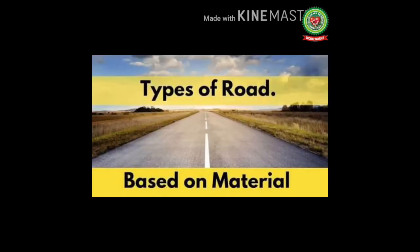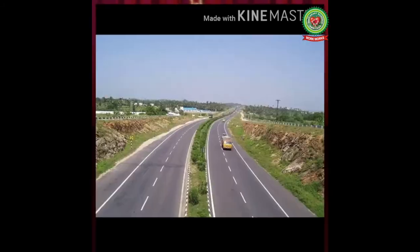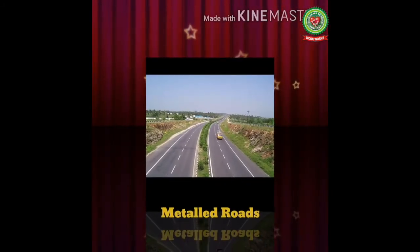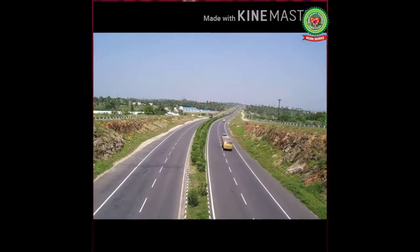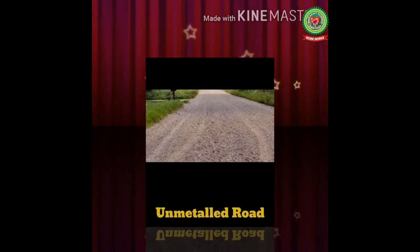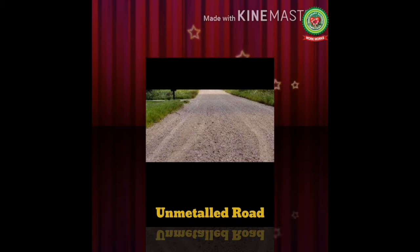There are two types of roads based on the material they are built with: metalled roads and unmetalled roads. Metalled roads are also known as pakka roads and are made up of coal, cement, and tar. These roads are generally found in cities and towns. Unmetalled roads are also known as kaccha roads, made up of mud tracks, and are usually found in villages.